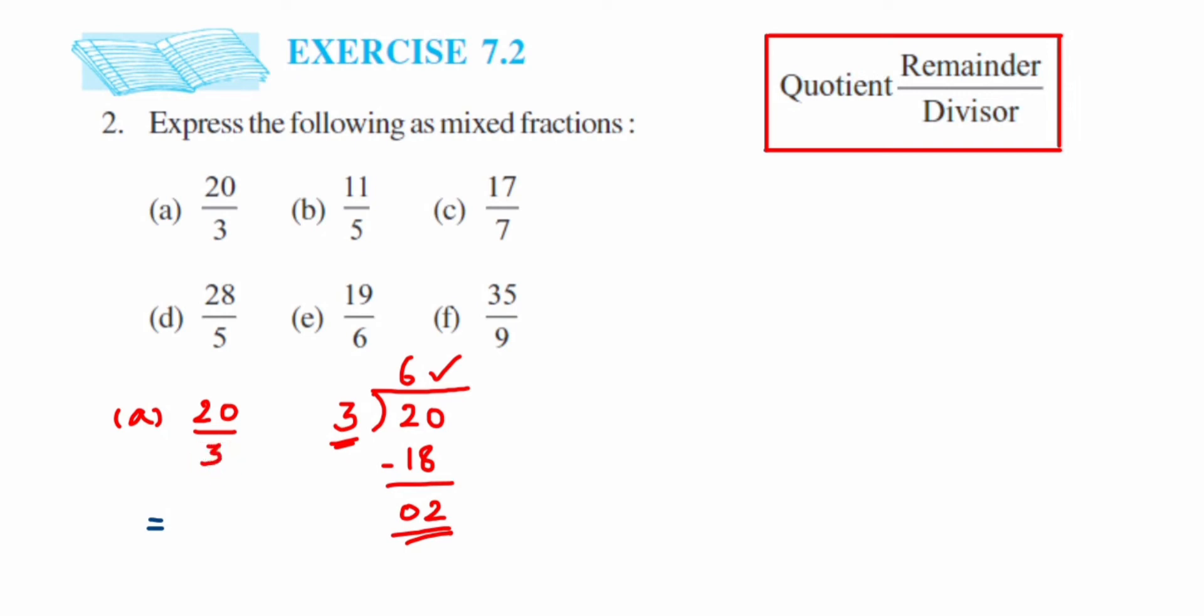Always remember, the number in the denominator will remain the same, so we'll get 3 here. This side, I have to write the quotient, which is 6. In the numerator, it will be the remainder, which is 2. So the answer is 6 and 2/3. Just follow this pattern of writing.